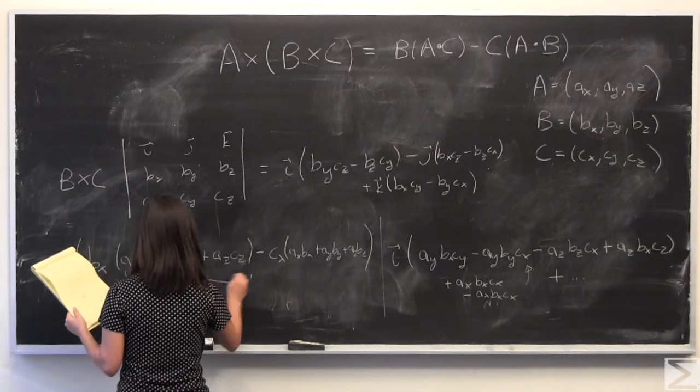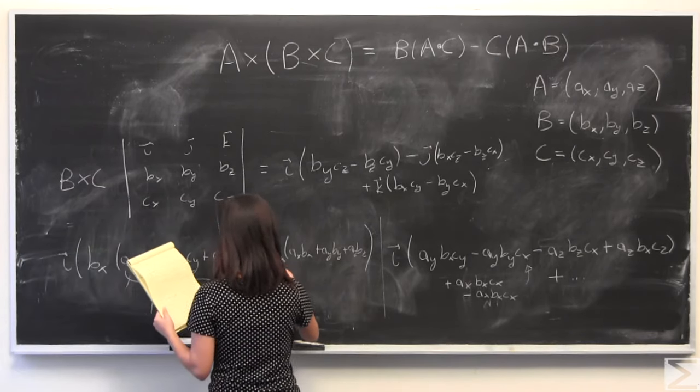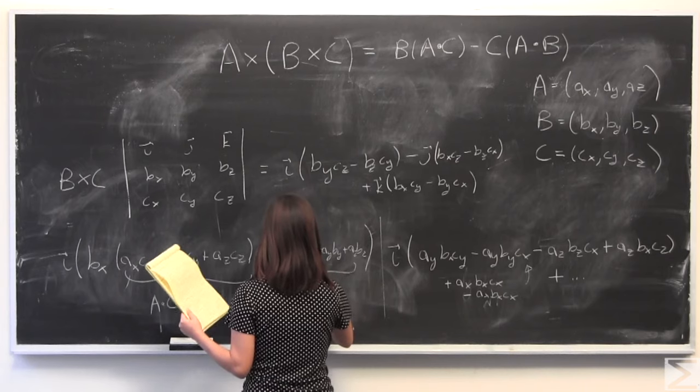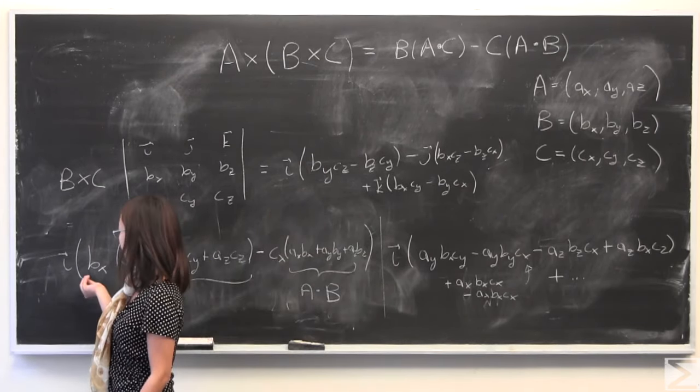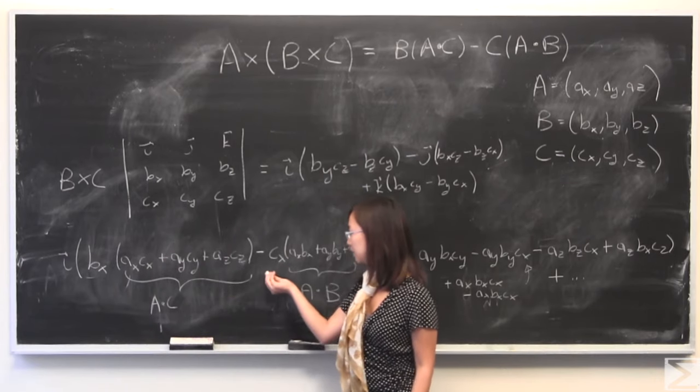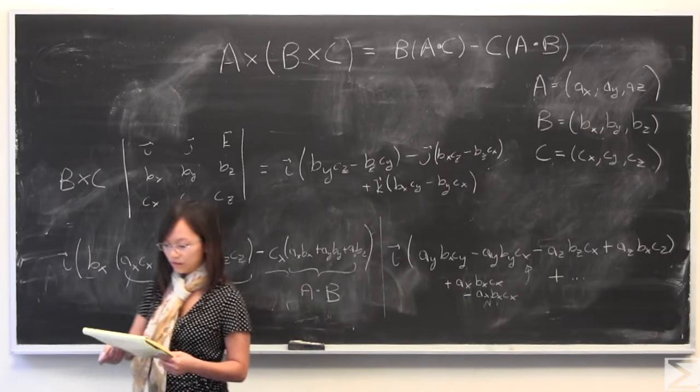And this is equal to a dot c. This is equal to a dot b. And we have a b of x term. We have a c of x term. So that is very cool.